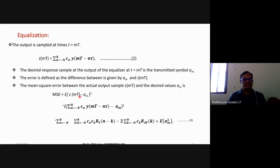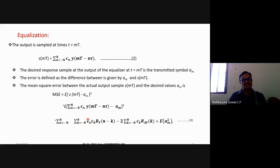Expanding the MSE expression by substituting Z(mτ) from equation 2 and using the (a - b)² expansion, we get: summation over n and k from -N to N of C_n · C_k · R_y(n - k), minus two times the cross-correlation term, plus E[A_m²]. Here R_y(n - k) is the autocorrelation function arising from noise. This is equation 3, the mean square error equation.